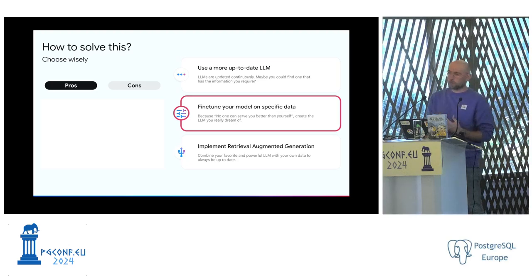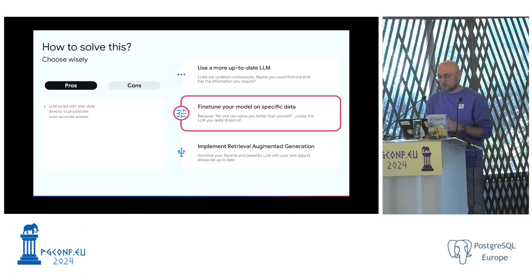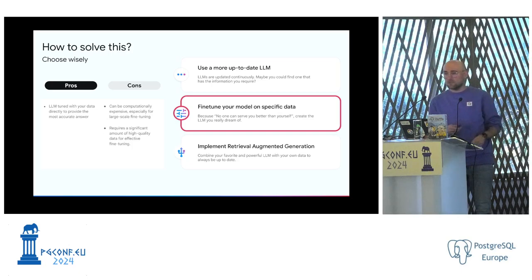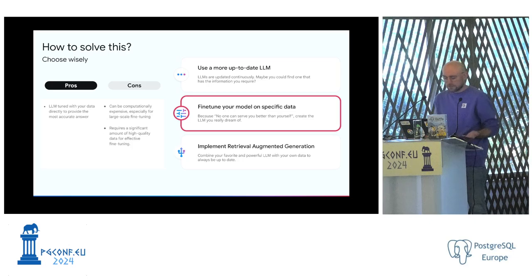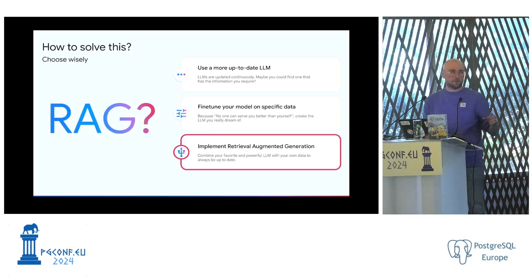Fine-tuning an existing LLM with updated or custom data could be the best solution — the LLM would be perfectly trained on board game rules. But training an LLM is extremely expensive in both time and money. I cannot update the LLM every time I have a new board game, so this is impossible. The remaining solution is Retrieval Augmented Generation.